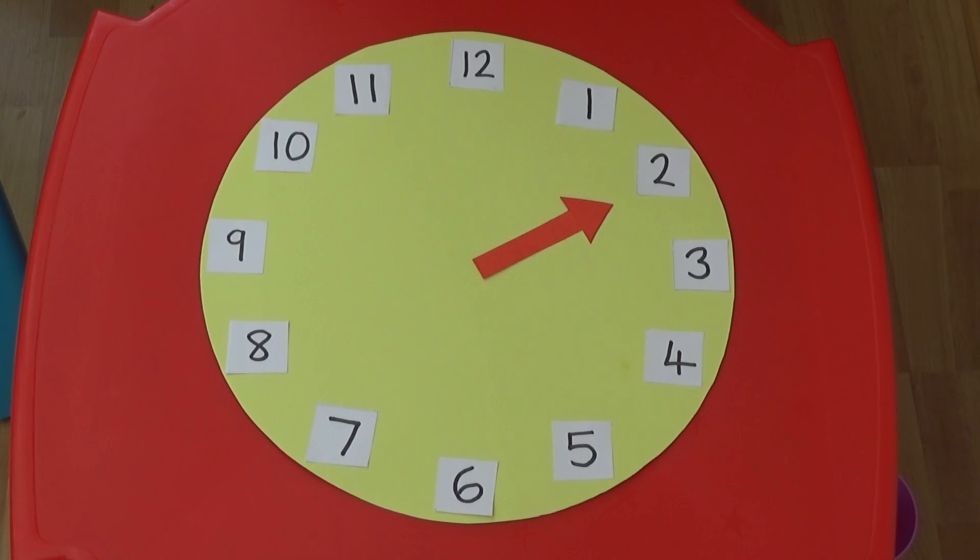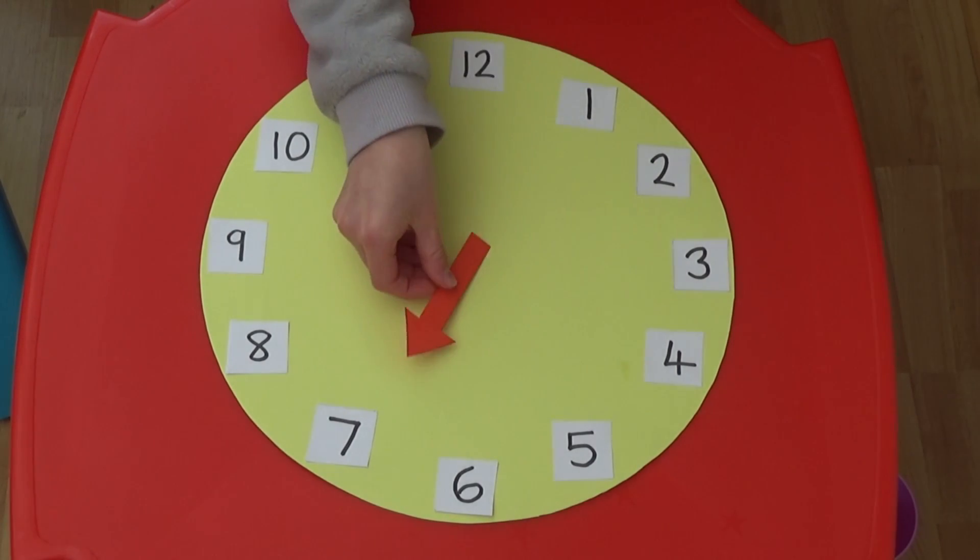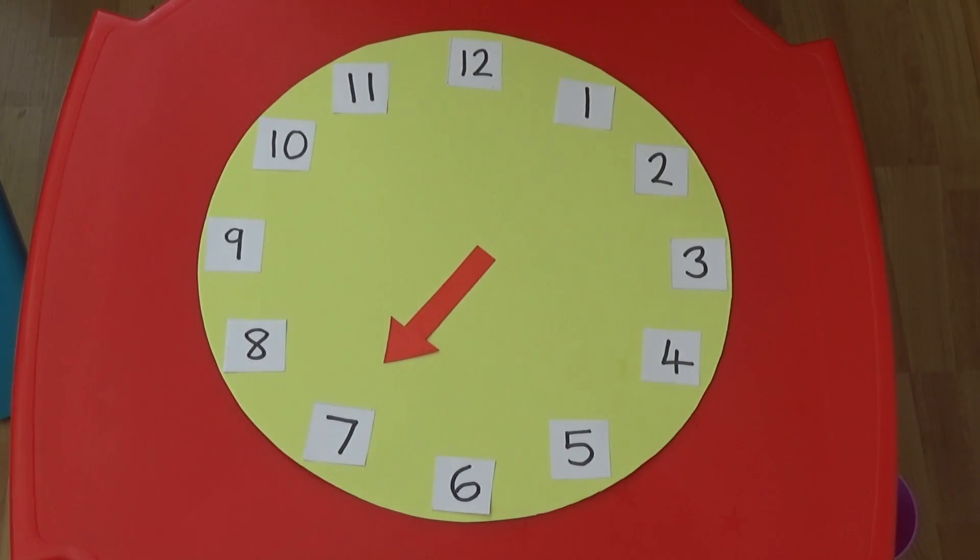We can see if I point the hand at the 7, it is 7 o'clock. And if I point the hand at 3, it is 3 o'clock.